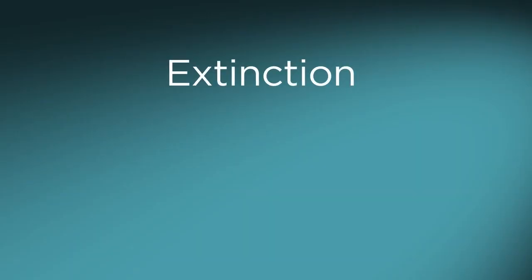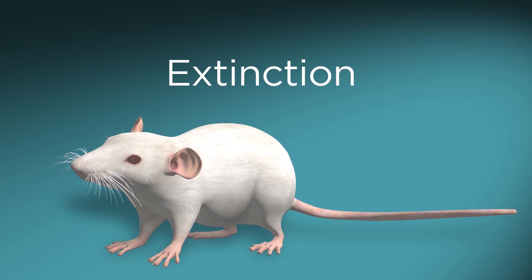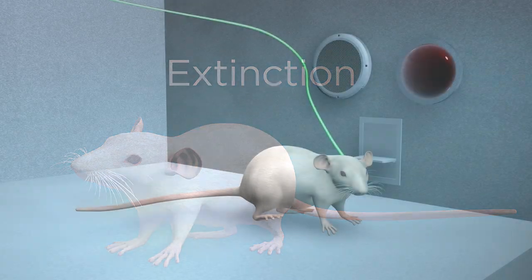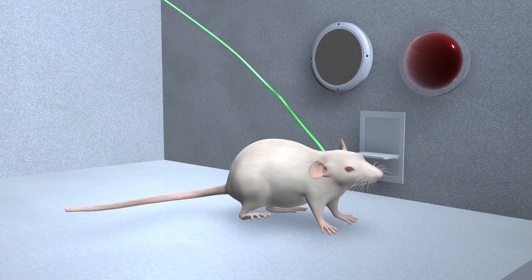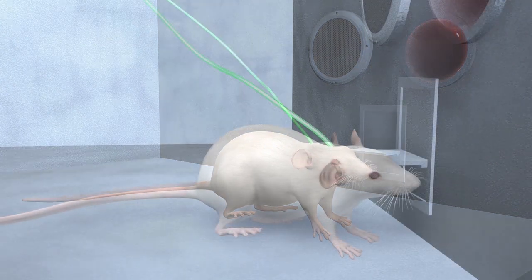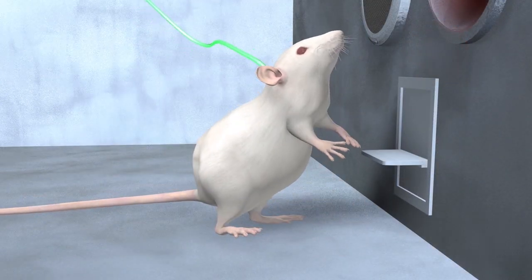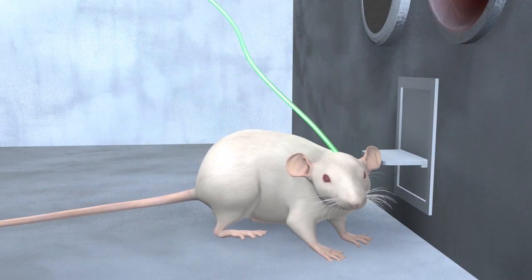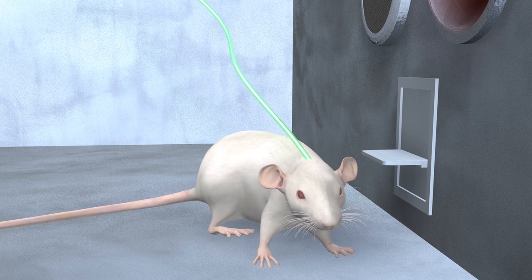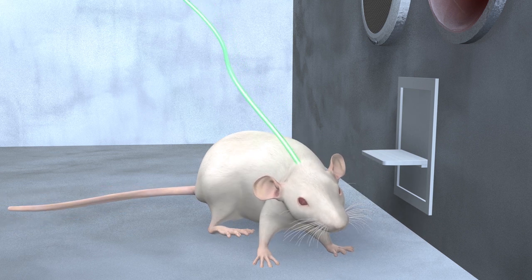Extinction. In this phase, experimenters extinguish the rat's motivation to press the lever by removing the lever's connection to the drug. The rat again finds itself in the test chamber. It presses the lever. Nothing happens — no tone, no light, no cocaine, no pleasure.